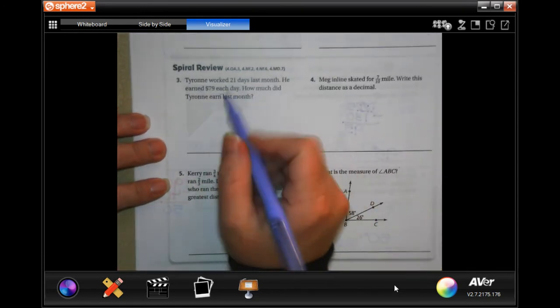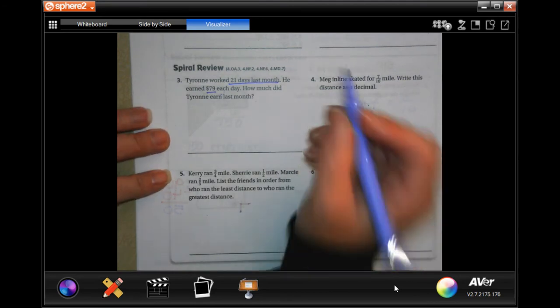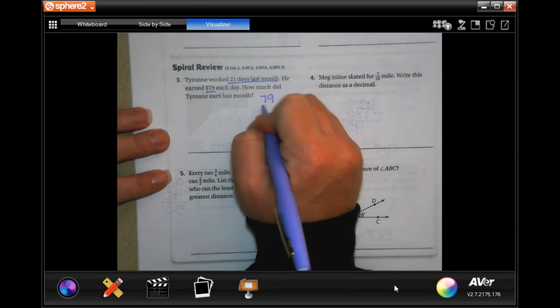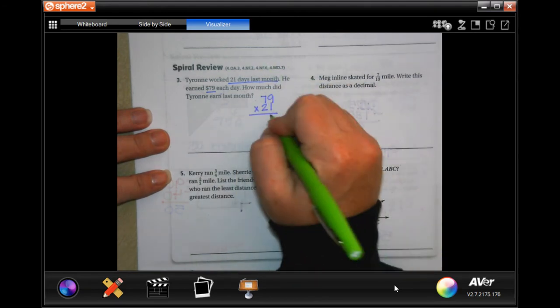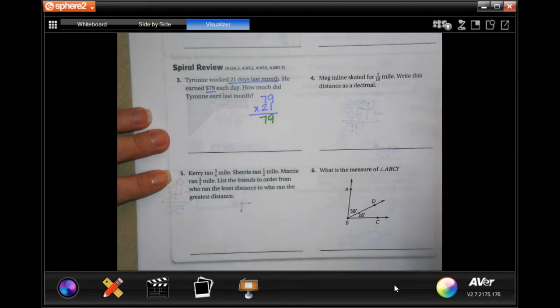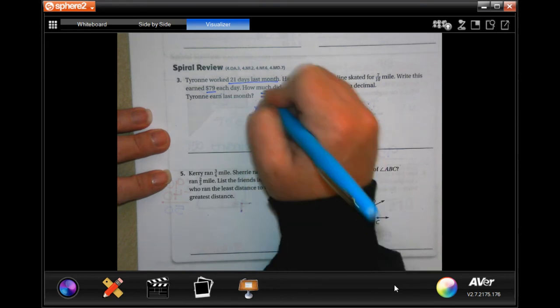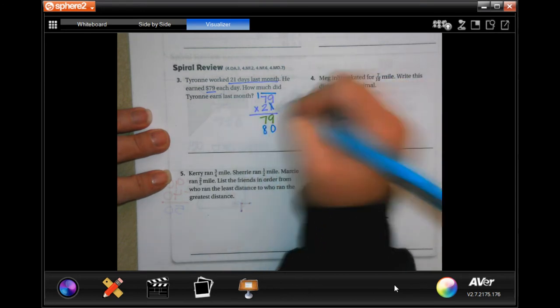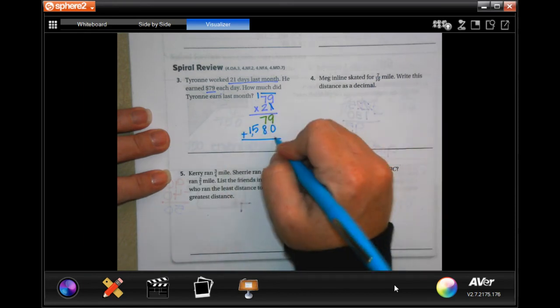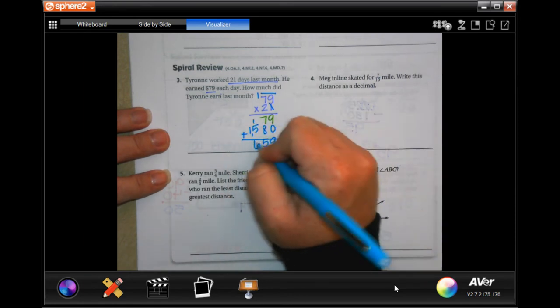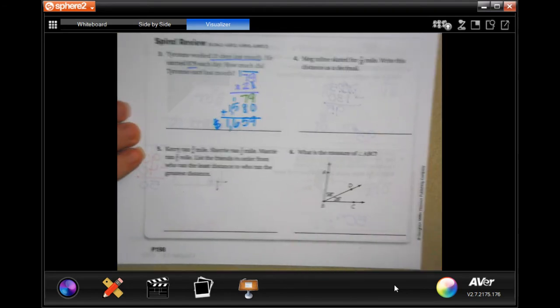It says Tyrone worked 21 days last month. Earning $79 each day. How much did Tyrone earn last month? Well, $79, 21 days. Let's find out. 1 times 9 is 9. 1 times 7 is 7. I'm going to tick, tack, and toe. 2 times 9 is 18. Carry the 1. 2 times 7 is 14. Plus 1 is 15. Add those up. 9, 15. Carry the 1. 6 and 1. Put a dollar sign in front of it, y'all.